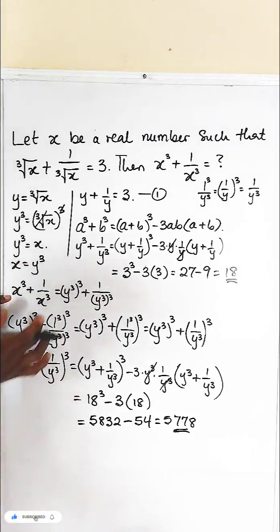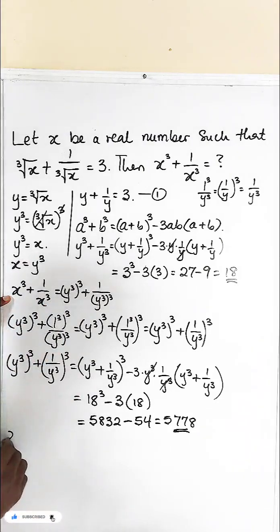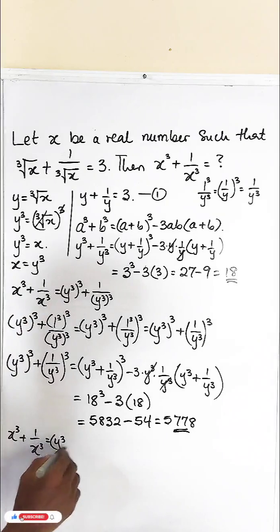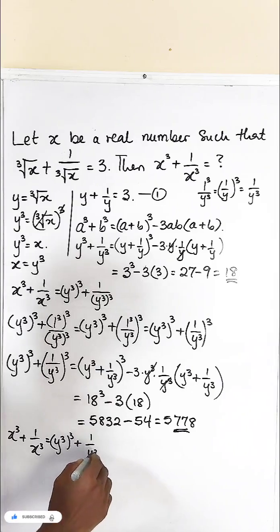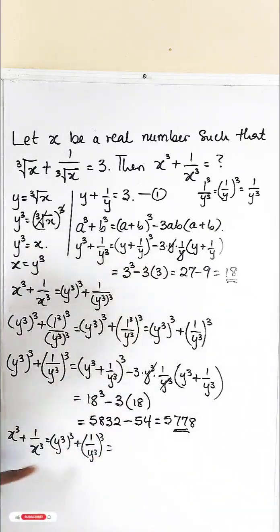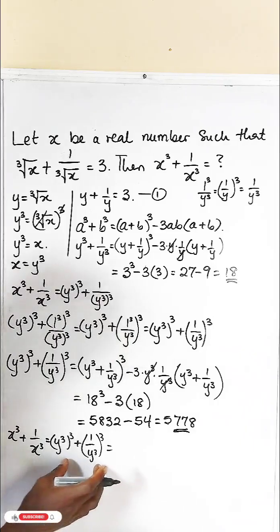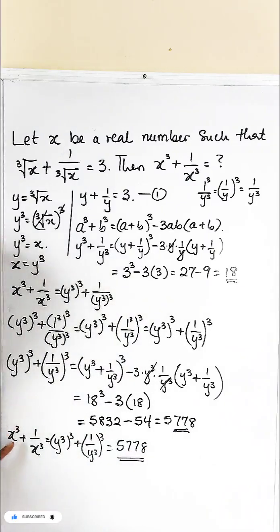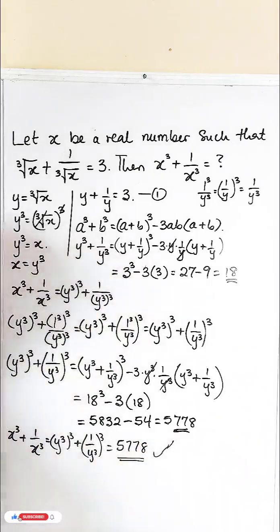So we can now state that x raised to the power of 3 plus 1 over x raised to the power of 3 equals y cubed all raised to the power of 3, plus 1 over y cubed all raised to the power of 3. Since the expression on the right gives us 5778, the final answer is: x cubed plus 1 over x cubed equals 5778. Thank you and God bless you.